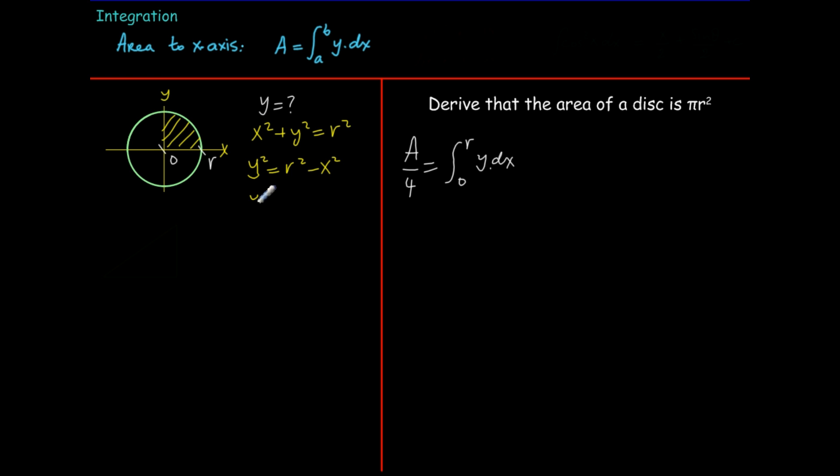And y then is the square root of r squared minus x squared. Now this is of the type we mentioned at the start so we rewrite our integral replacing y with the square root of r squared minus x squared.